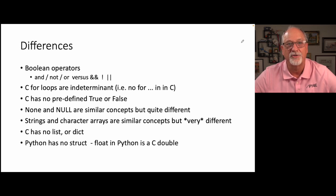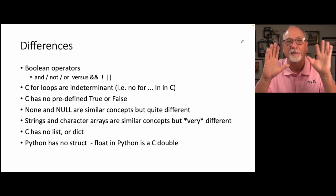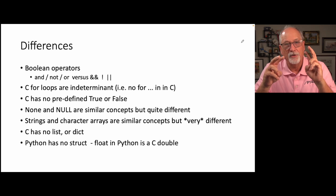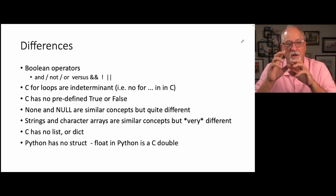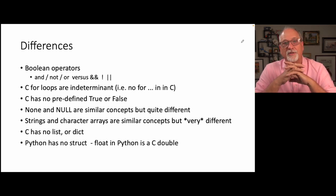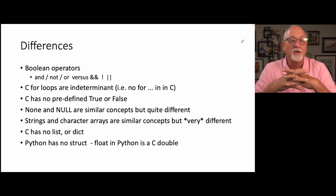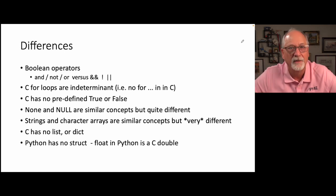In C, logical operators are double-ampersand for 'and', exclamation point — called 'bang' — for 'not', and double vertical bar for 'or'. In Python, we use the words 'and', 'not', and 'or'. In C we have a for loop, but it's an indeterminate loop — you have to examine it to see if there's an infinite loop, whereas Python's 'for x in some list' is a determinant loop that only runs until the list is exhausted. In C, every loop has a condition to finish it.